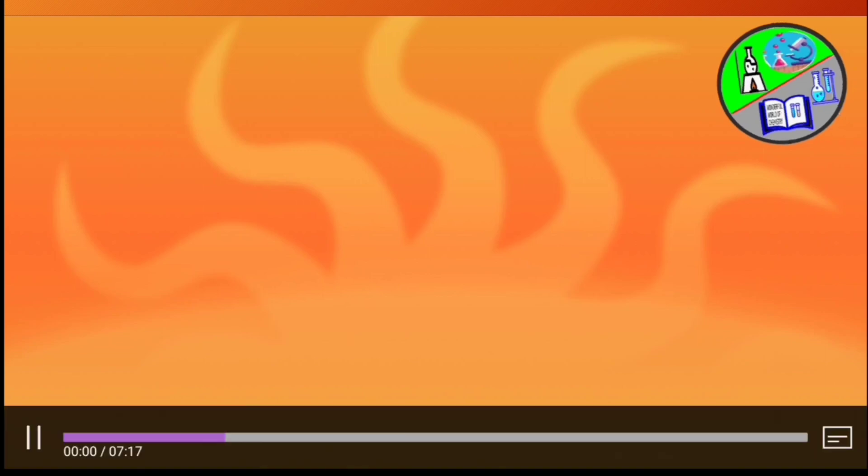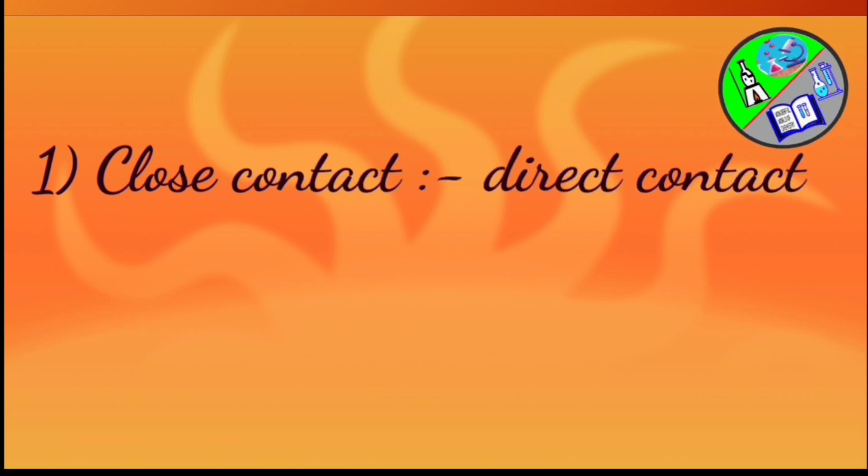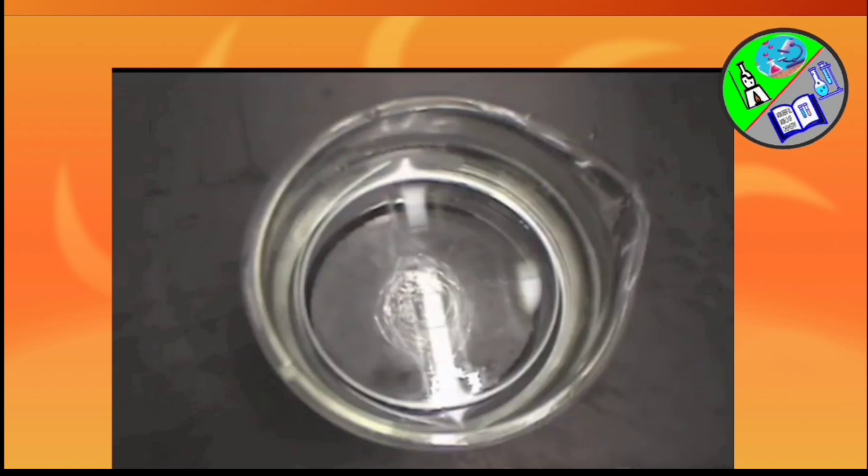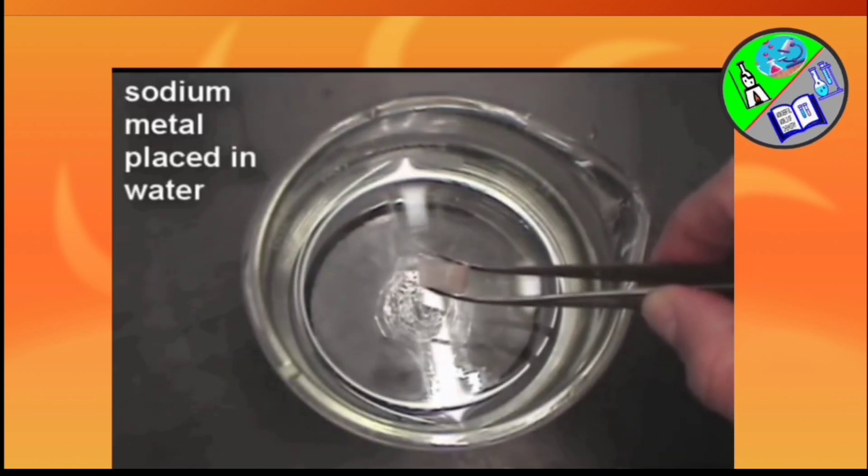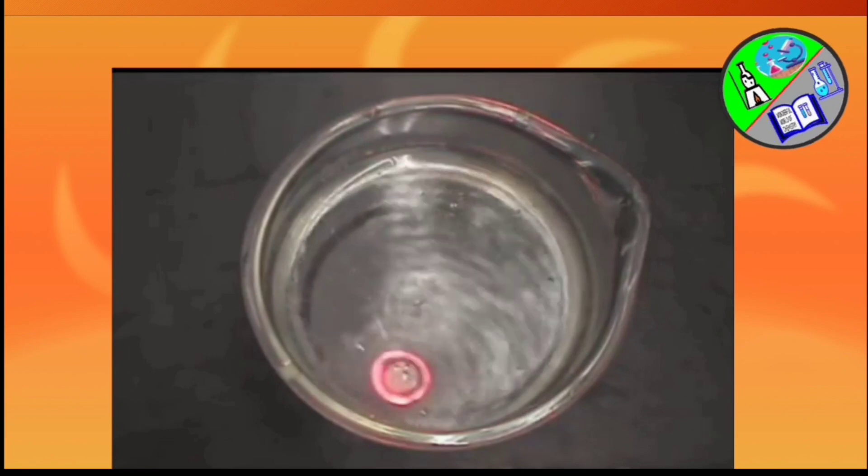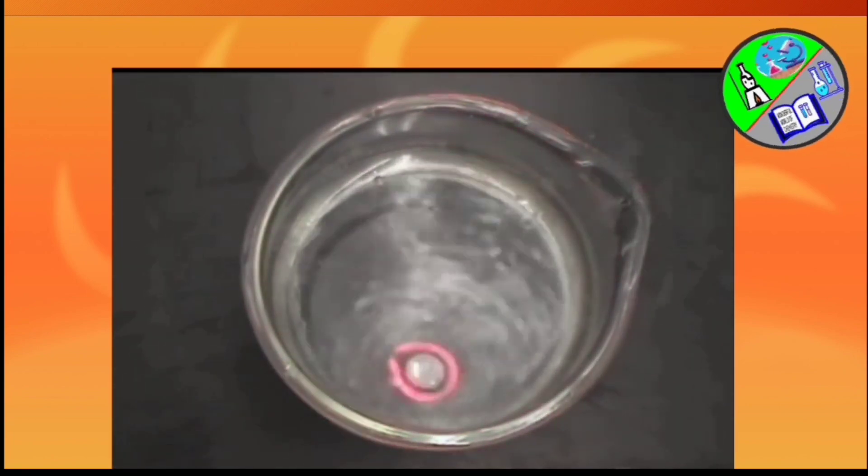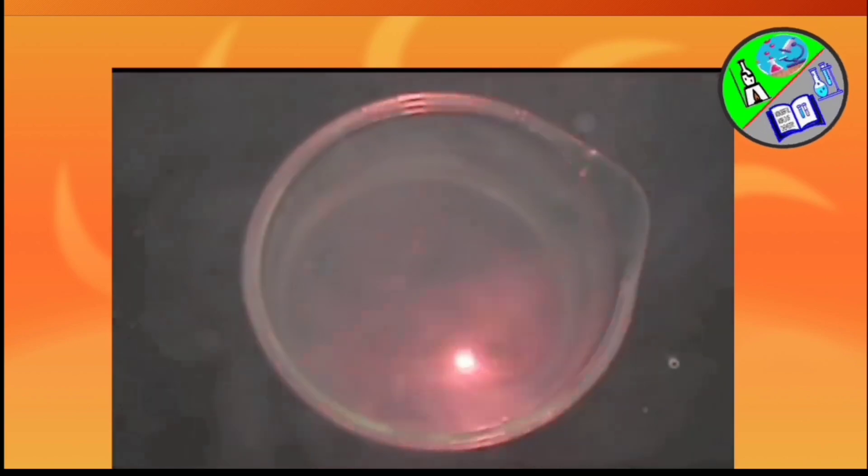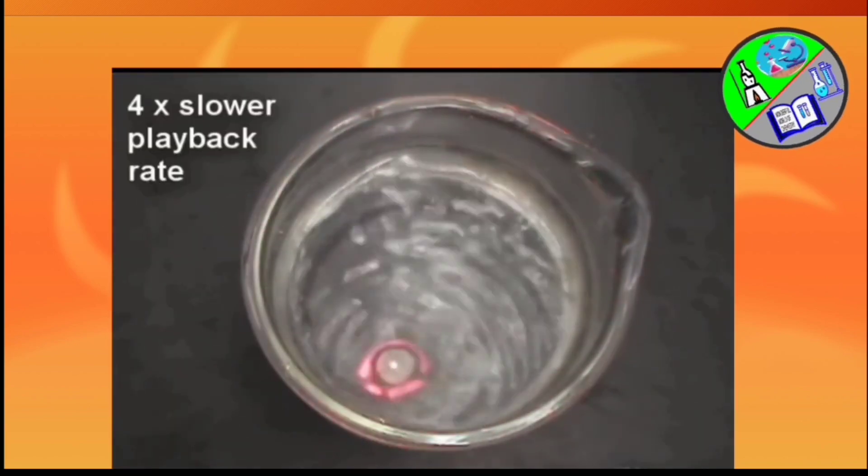First is close contact. There are certain chemical reactions which take place when reactants are in direct contact. Sodium, when it reacts with cold water, sodium hydroxide forms with liberation of hydrogen gas. In this experiment we can see when sodium metal is placed in cold water, it reacts vigorously, energetically. We can see the experiment again in slow motion.